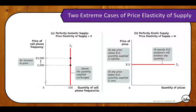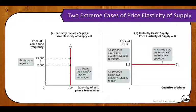The flatter the supply curve, the more elastic the supply. The more vertical the supply curve, the more inelastic the supply — the same as with a demand curve. Supply curves can be anywhere between perfectly horizontal and perfectly vertical, just like demand curves. The flatter the curve, the more elastic; the more vertical, the more inelastic. The value can be anywhere between zero and infinity. Most elasticities for both demand and supply fall somewhere between those extremes.